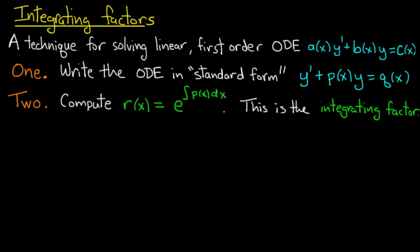The next step is to compute the integrating factor. The integrating factor we'll call r(x), and it's the exponential of any antiderivative of p(x) that we choose. We have this function p(x) in the equation, we compute an antiderivative of it, and take e to that antiderivative—that will be the integrating factor.